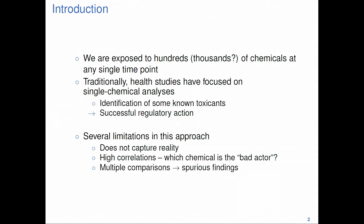There are also high correlations to contend with. I might detect an association with one chemical, but that doesn't mean that chemical is the toxic one — it might be a chemical that's very well correlated with it. Also, if I run multiple regressions for every single chemical, I'm severely increasing my chances of detecting spurious associations just due to chance.